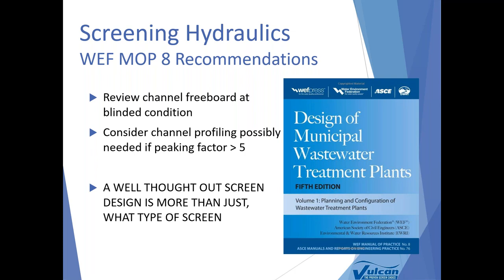When looking at high peaking factors, a common discussion is how to vary the downstream water level across the full flow regime — from 1 or 2 AM low flow all the way to peak condition — to optimize velocities in the channel and through the bars. We talk about channel profiling or channel fillets, where triangular-shaped fillets of concrete grout are poured against the walls so that velocity at the bottom of the channel is higher at low flow. The use of a downstream weir can force a backwater or higher water level on the screen. These different design approaches can be considered in high peaking factor conditions.